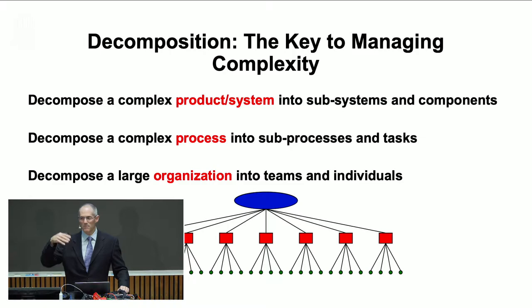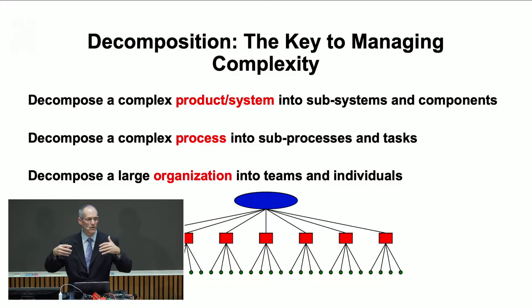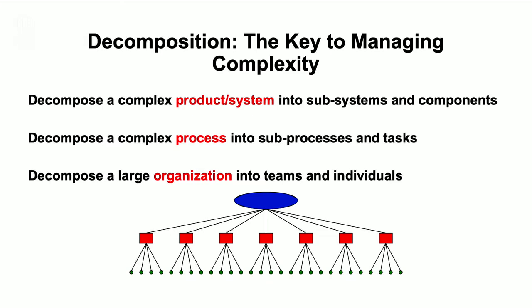We have many things to do in a process — we split it into phases with parallel work streams for different types of work, decomposing just to get our head around the thousands of tasks. Similarly, we decompose an organization — perhaps traditionally in terms of reporting relationships — to manage all the many people involved.